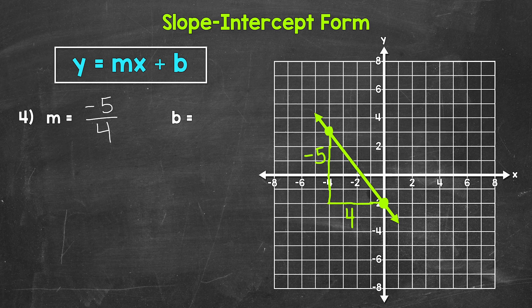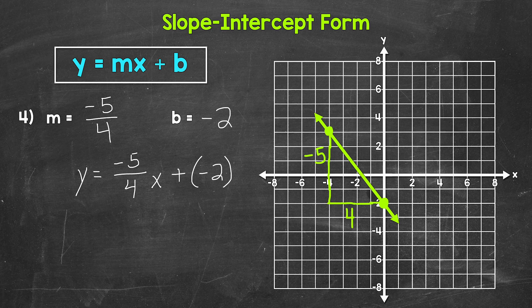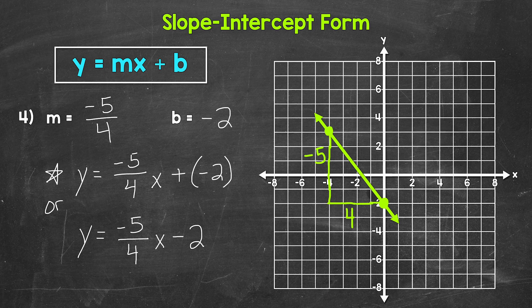So let's write our equation. Y equals negative 5 fourths x plus negative 2. Just like we talked about with number 3, we can simplify this — let's rewrite it using subtraction. So we can simplify this equation and rewrite it as y equals negative 5 fourths x minus 2. Here's our equation with adding negative 2, or we can simplify that and rewrite it with subtraction.